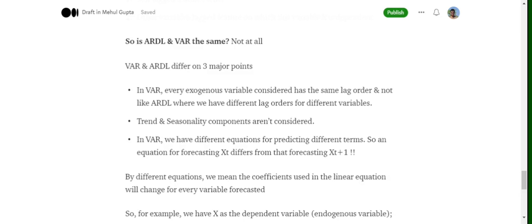Both of them use the lagged values of the forecasted variable as well as other exogenous variables present. Exogenous means the independent variables in the dataset. So if we have three variables X, Y, Z, where X has to be forecasted, then in both cases we'll be considering the lagged versions of Y, Z, as well as X itself.